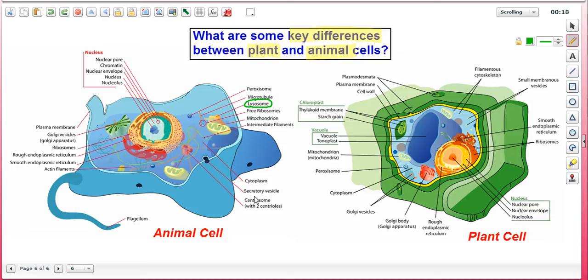Moving down the list, we see the centrosome, the centrioles of which are crucial to the formation of spindle fibers in mitosis. This you'll find in the animal cell but not the plant cell, even though the plant cell does undergo mitosis. Typically, you will not find flagella or cilia in plant cells, but you will find these in animal cells.